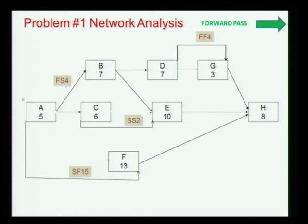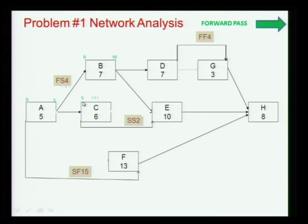We now do the forward pass — the analysis goes on. This is the early start and early finish. This becomes 9 because of a finish-start with a lag. This goes to 16. Here we start this at 5, giving 11 — that is 5 plus 6 equals 11. This is a normal finish-start, so 16 and then 23.